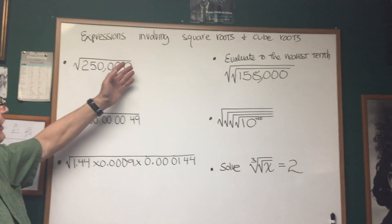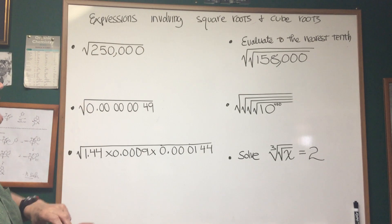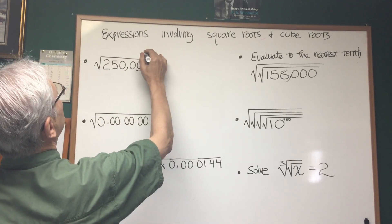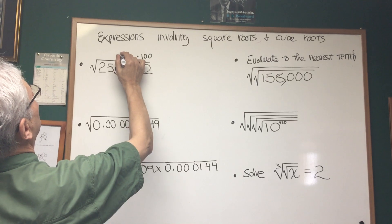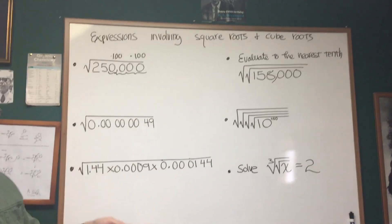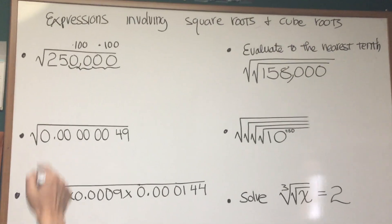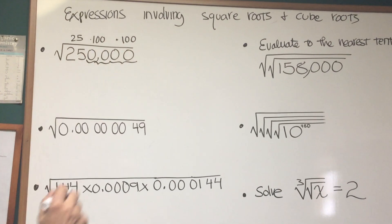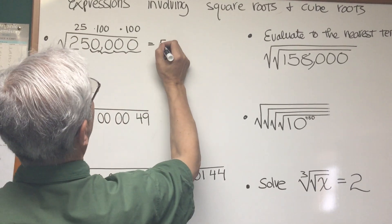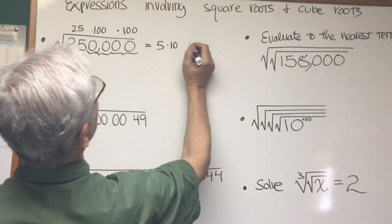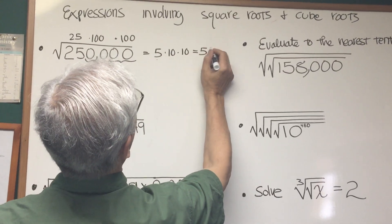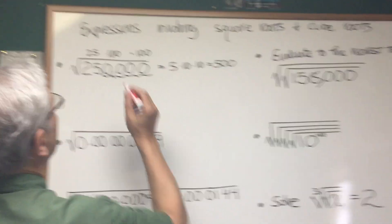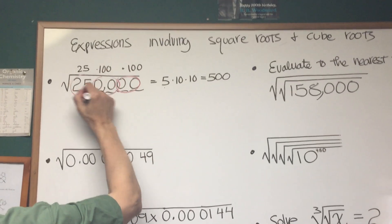Okay, Professor Blyce here. Let's take a look at these expressions involving square roots. We want to evaluate the first square root: 250,000. Notice that every time we have a double zero, this is like a product of 100. We know that when we divide a number by 100 we eliminate zeros, and when we multiply by 100 we add two zeros. So I can break this expression down into 25 times 100 times 100. In square root form, the square root of 25 is 5, the square root of 100 is 10, and the square root of 100 is 10. So we have 5 times 10 times 10, and that's 500.